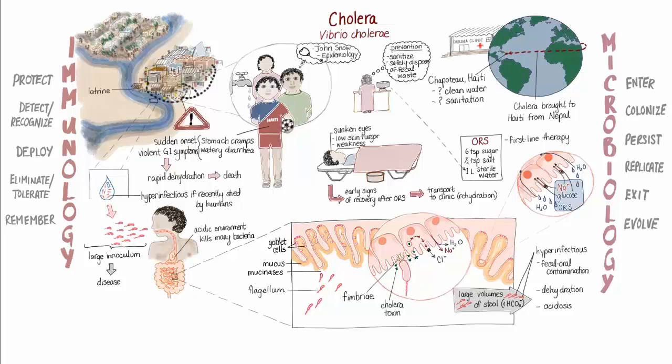Oral rehydration therapy can reduce the risk of dying from cholera from 20% to 1% in many parts of the world. By understanding the interactions between socioeconomics and the pathogenesis of infectious disease, medical teams can develop strategies for treating and preventing infectious disease around the world, and health outcomes like Philippe's complete recovery can become the norm instead of the exception.